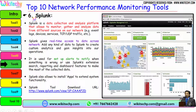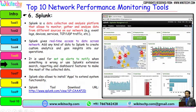Rank 6 is Splunk. Splunk is considered one of the latest and most famous tools in network performance monitoring. Splunk is a data collection and analysis platform that allows you to monitor, gather, and analyze data from different sources on your network. It gives real-time access to data across the network and you can add any kind of data to Splunk to create custom analytics and gain insights into your operations. It is used to set up alerts to notify when something is wrong, or use Splunk's extensive search, reporting, and dashboard features. Splunk also allows you to install apps to extend system functionality. Here is the Splunk download URL.